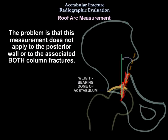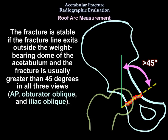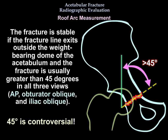This roof arc measurement does not apply to posterior wall fractures or to associated both-column fractures. The fracture is considered stable if the fracture line exits outside the weight-bearing dome of the acetabulum, usually more than 45 degrees on all three views, though the 45-degree threshold is controversial.